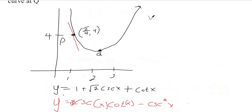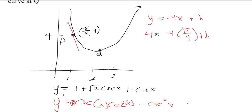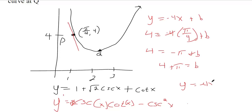So if we want the equation of this line, we know the slope is negative four. We just need to find the y-intercept. Plug in four for y and pi over four for x, then solve for b. Those cancel, giving four equals negative pi plus b, so b equals four plus pi. The full equation is y equals negative four x plus four plus pi.